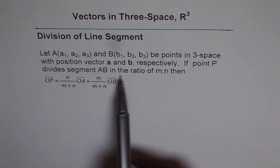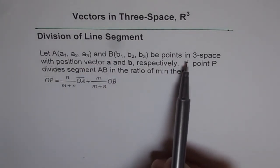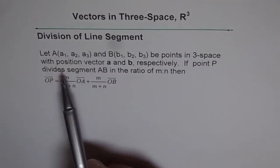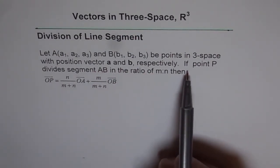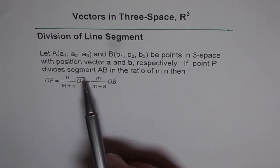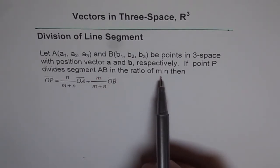So let's read this part again. Let A and B be points in 3 space with position vector a and b respectively. If point P divides line segment AB in the ratio of M is to N...